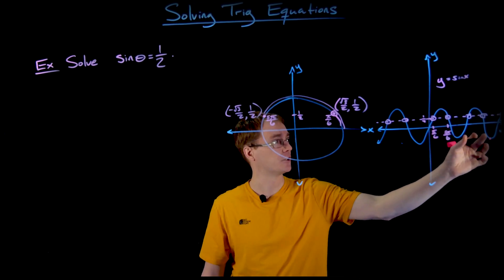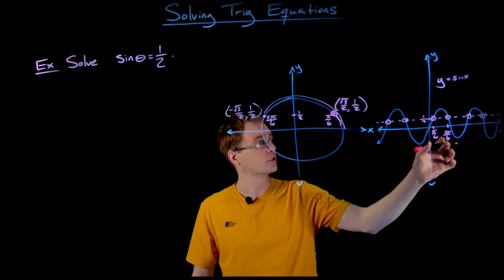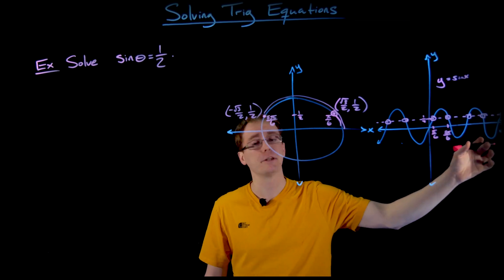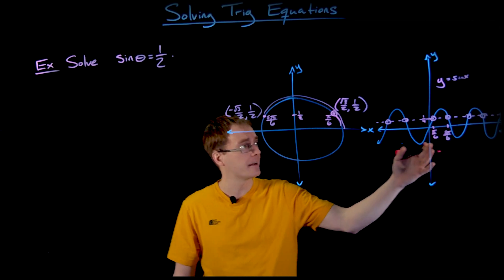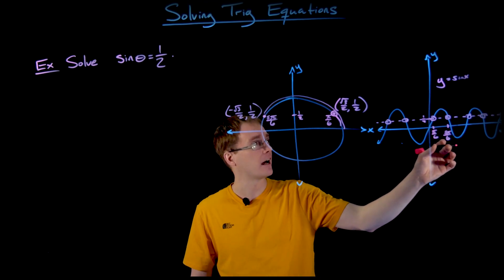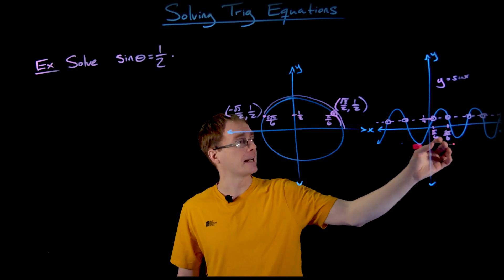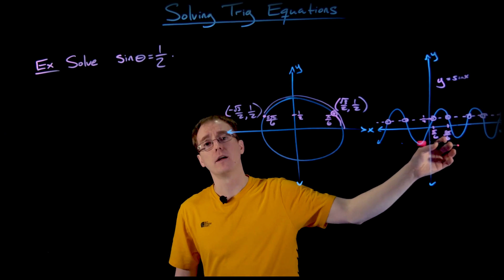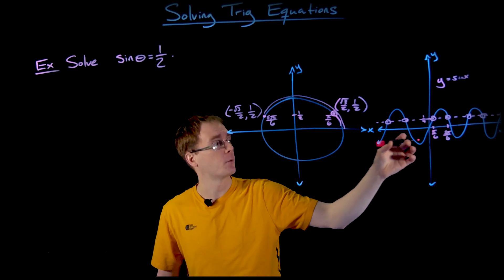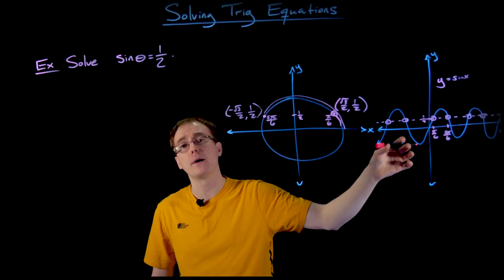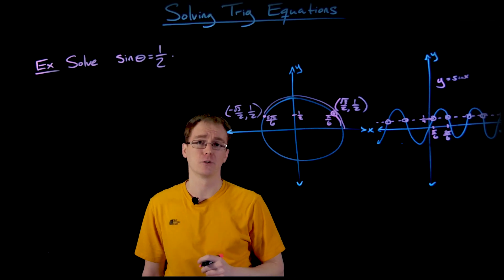How do we get the next solutions further to the right from the graph of our sine function? These next solutions are just going to be one period away from those first two solutions. So we add an additional period length to each of these theta values, and by adding that period to the original solutions we obtain the next set of solutions. If we subtract that period — subtract 2π — from those first two solutions, we get even more solutions to the left of our original two.